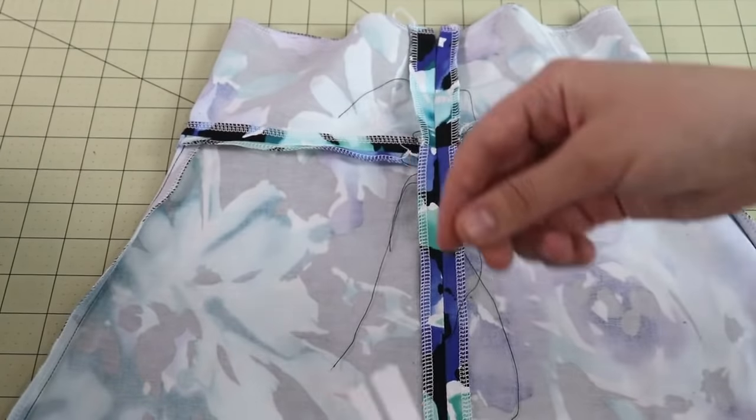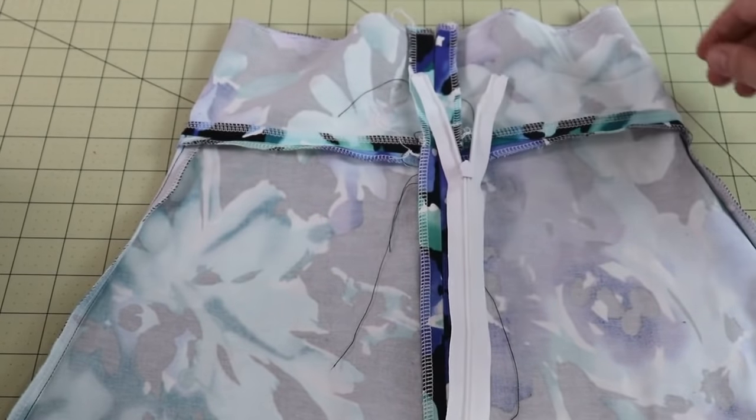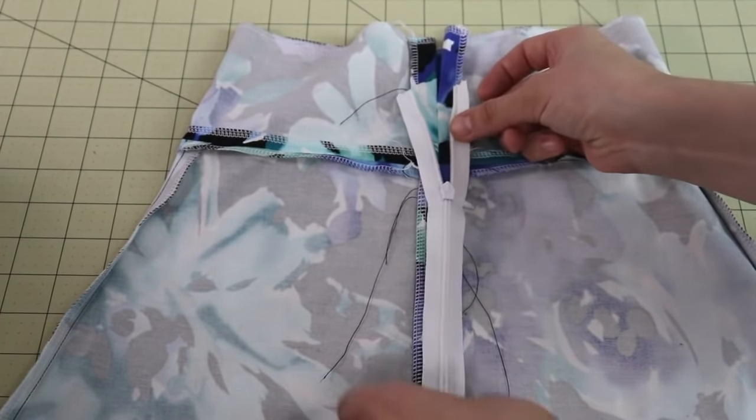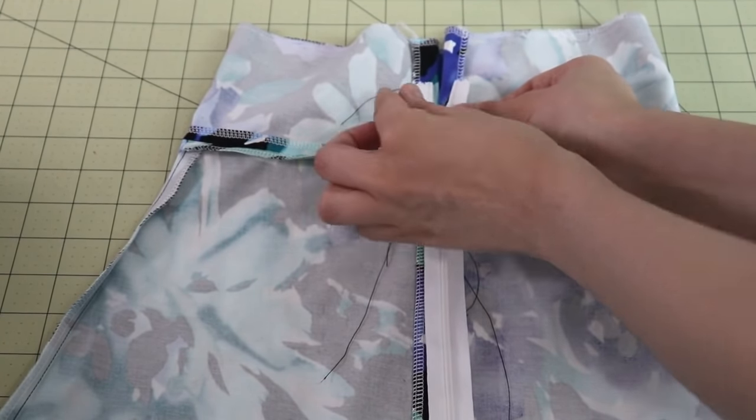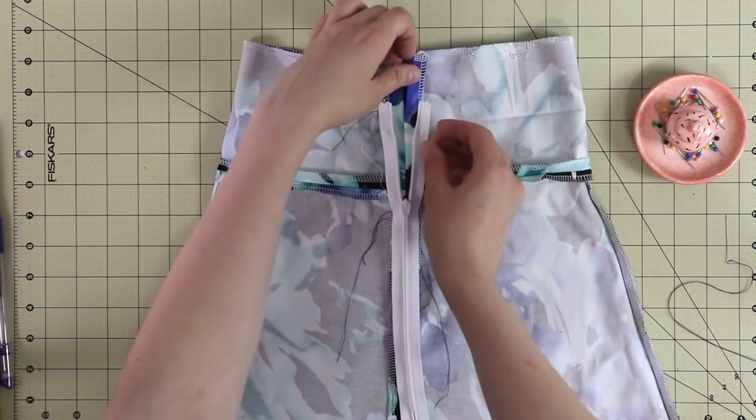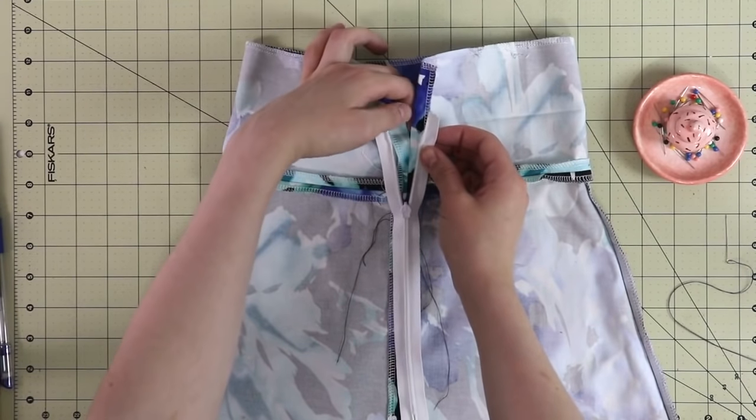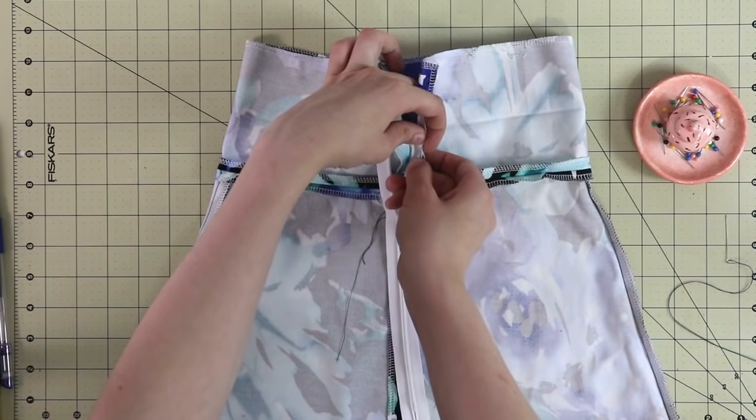So you want to take your zipper, place it face down on that center back seam that you just ironed out, and you want to place those stoppers on the crease. After you have found the position that you like, go ahead and pin the zipper so it stays in place while we baste it.